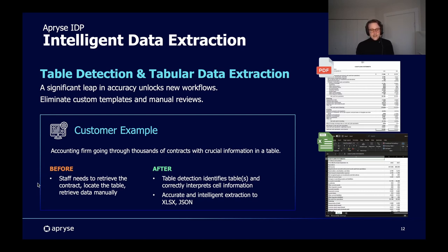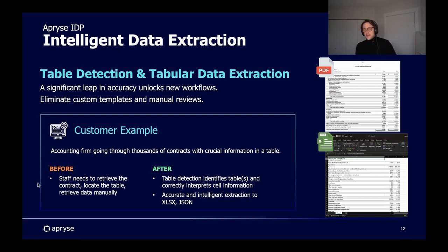The problem with existing data extraction was that it didn't really know where to look for the table, so it extracted the entire long contract with all the text into a data dump — and somewhere within that dump was the table they actually wanted. Now with Apprise, tables can be detected reliably within the document, and once detected, the extraction API was set up as a follow-up step, extracting exactly the tables staff were looking for in a single step into Excel and into their database. Not having to maintain all those templates and simply being able to detect and extract saves the company significant time, money, and pain. I'll now hand it back to John for a demonstration.